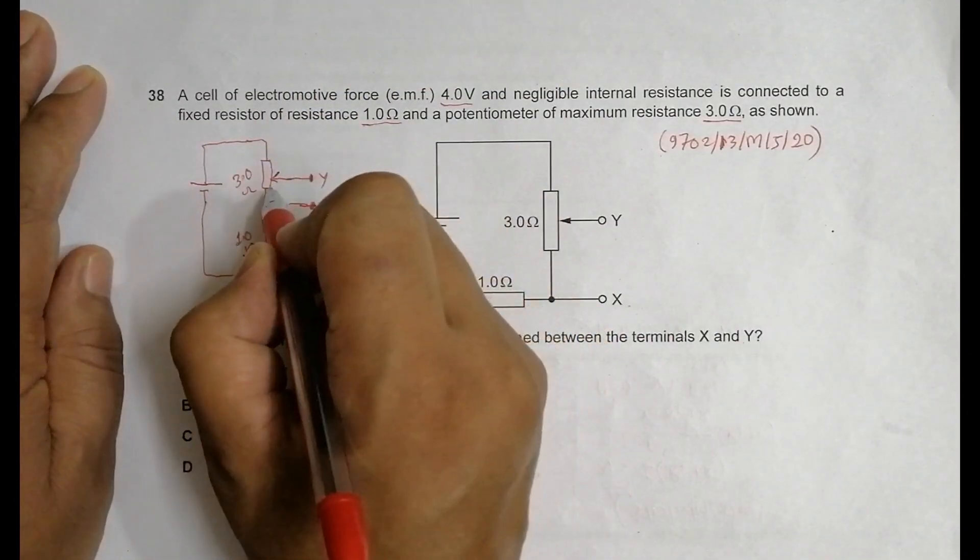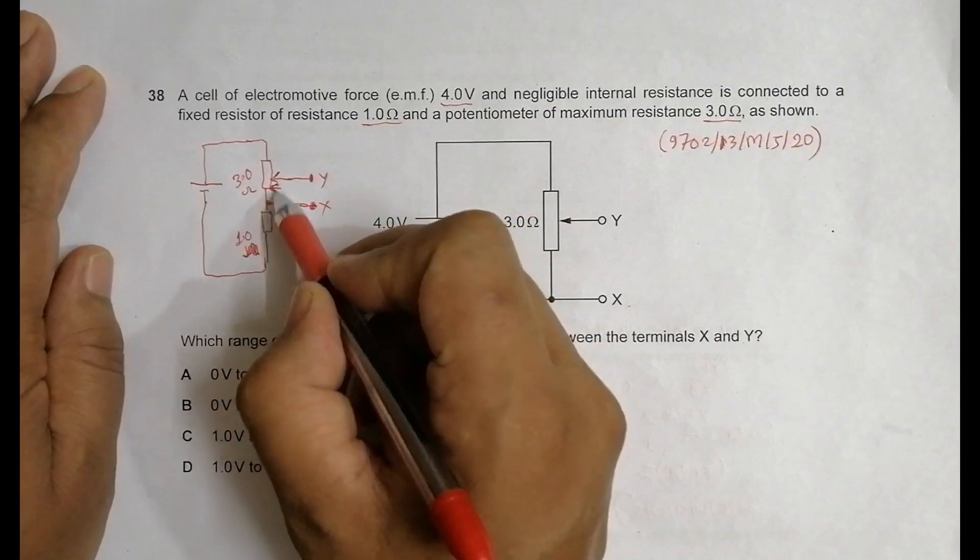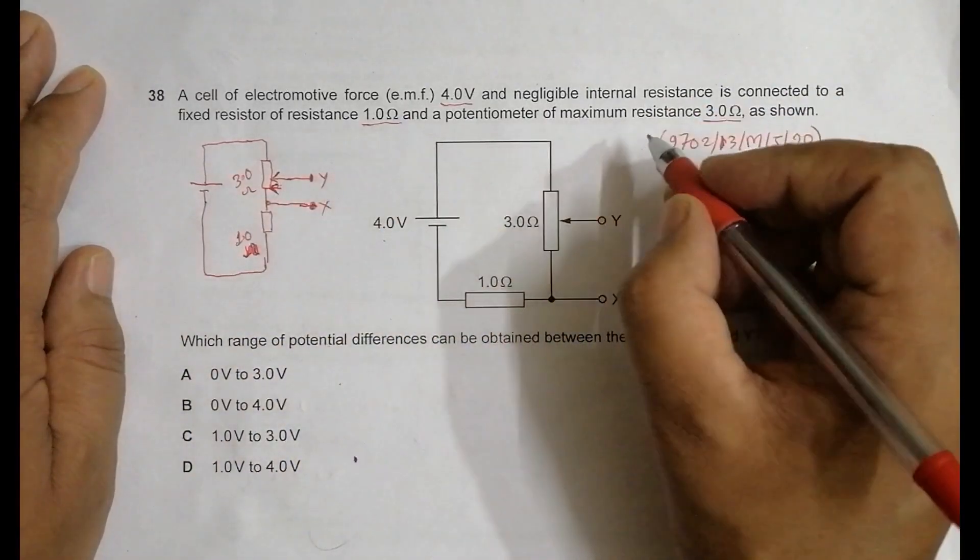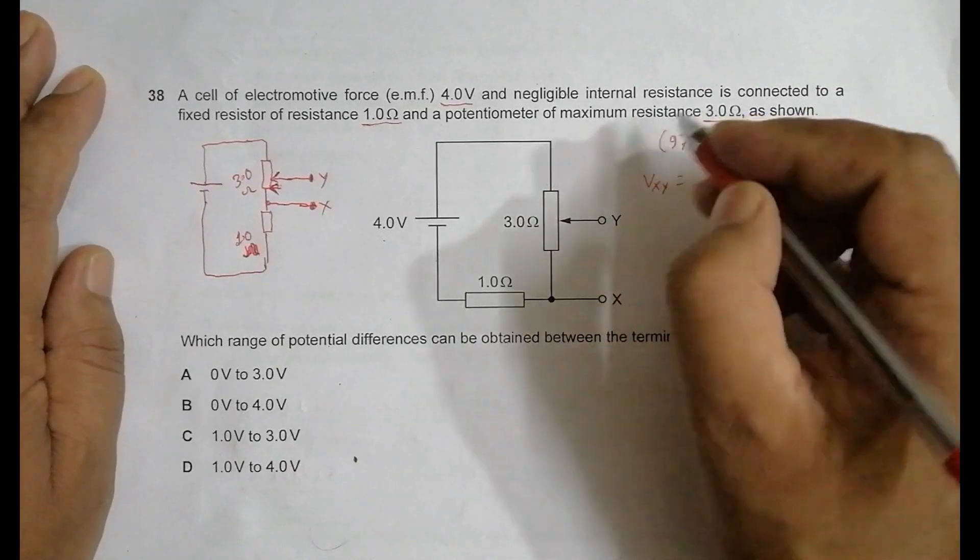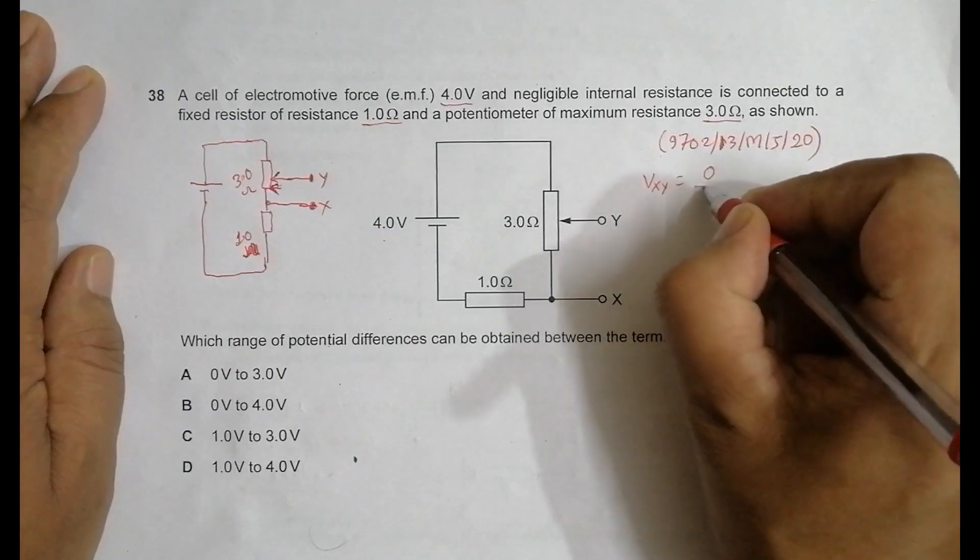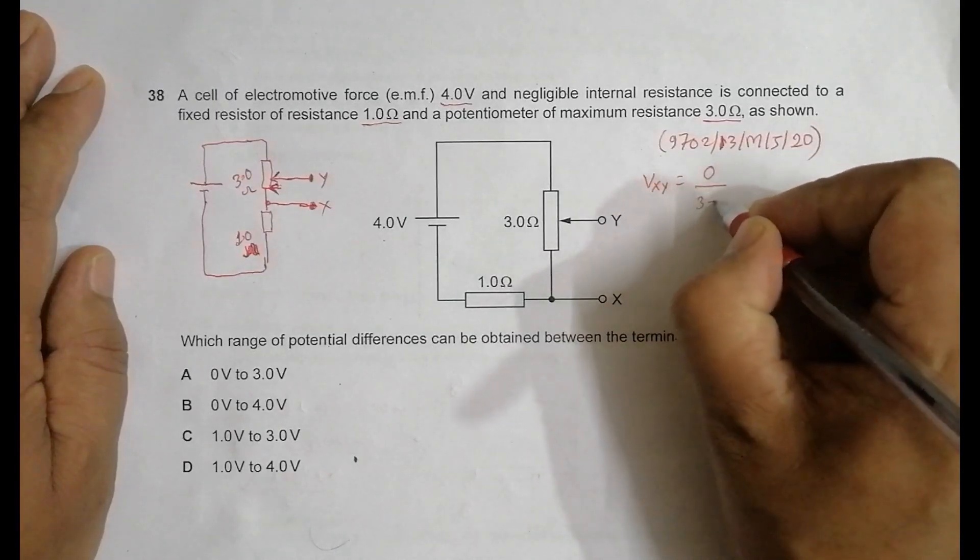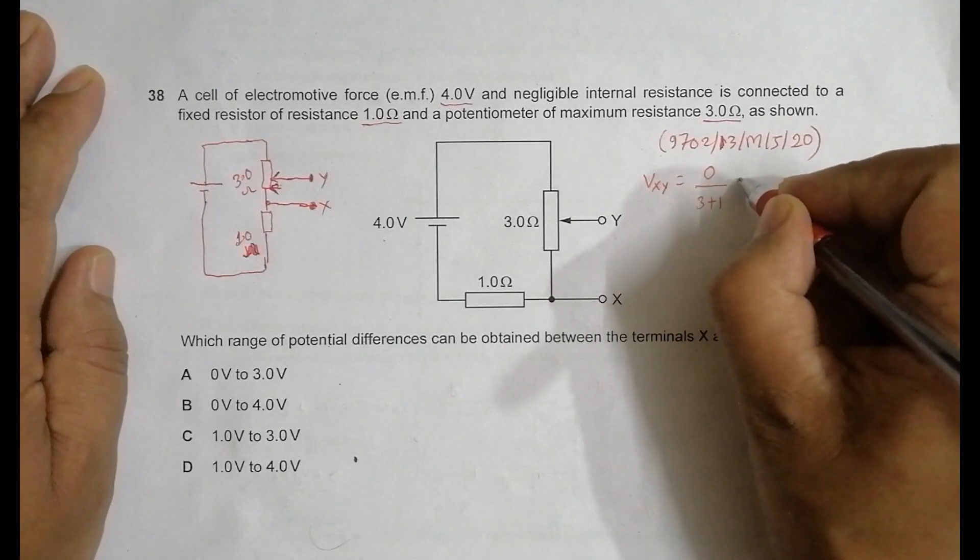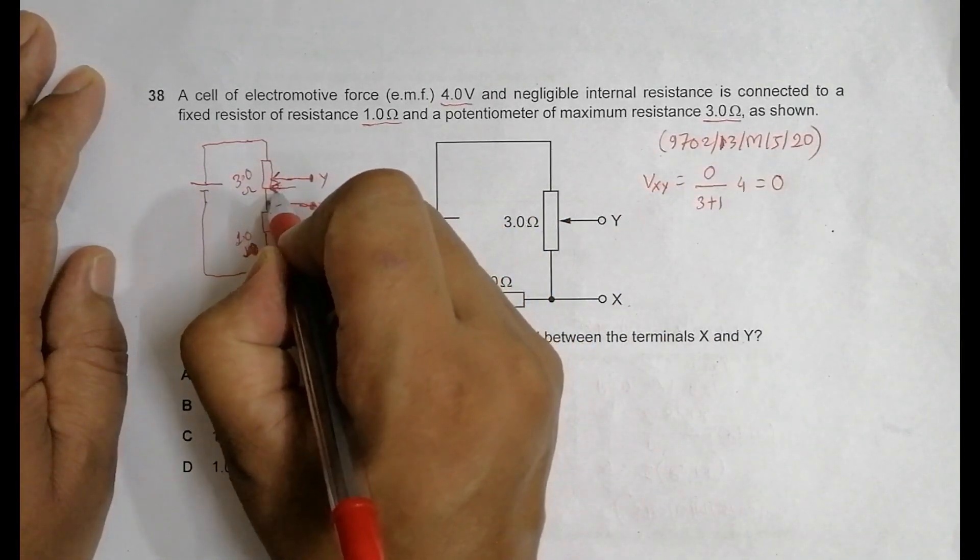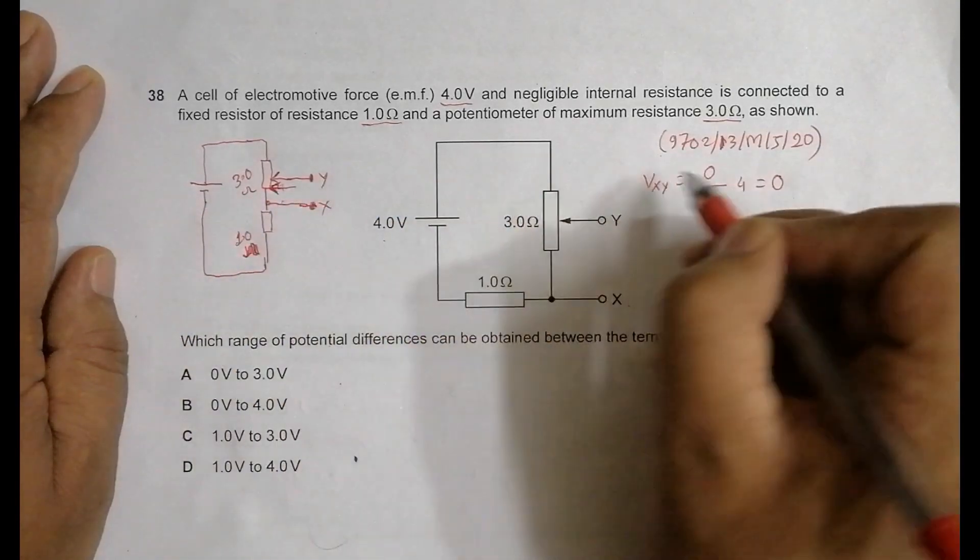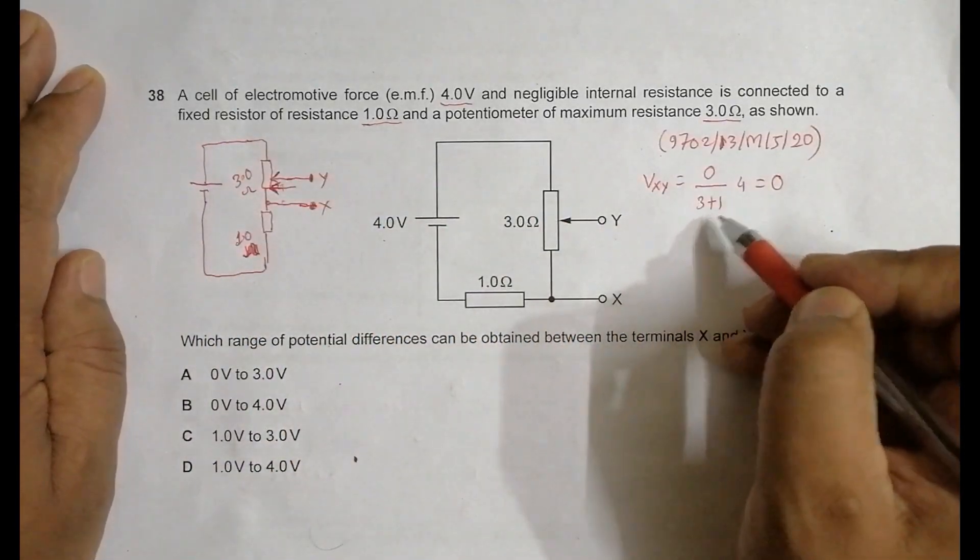Now when we have this Y terminal over here, the resistance between X and Y will be 0. At that time our output will be VXY equal to the lowest value, which is 0 by the total resistance here, which is 1 plus 3, 3 plus 1 into the EMF 4. That's equal to 0. When the wire is connected here, the resistance will be 0, so it is 0.